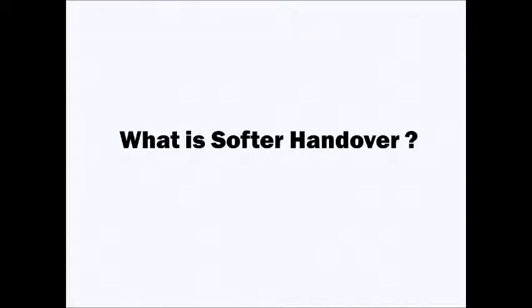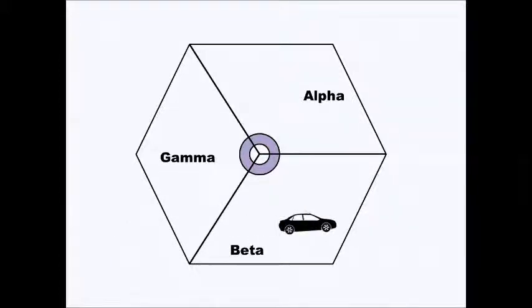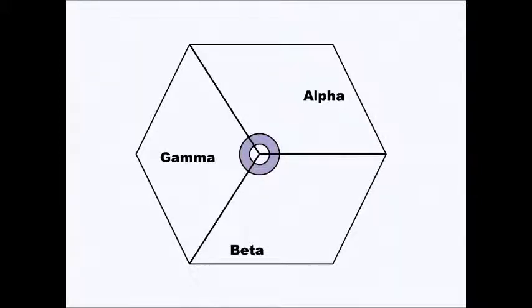What is softer handover? As discussed earlier, handoff occurs when a person moves from one cell to another. But in the case of softer handoff, handoff occurs when the person moves within the same cell site — handoff takes place between the sectors of the cell. This happens when the person moves from the alpha sector to the beta sector, beta sector to gamma sector, or gamma sector to alpha sector. As shown, a vehicle traveling within its own cell site passes through various sectors. This transition from one sector to another does not affect the ongoing call. This is because of softer handover. We hope this video has helped you learn all about handoffs in mobile communication systems.